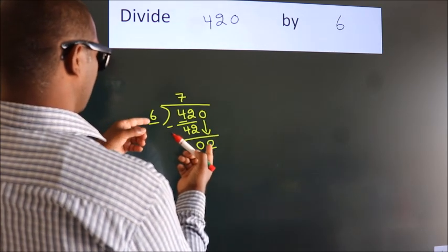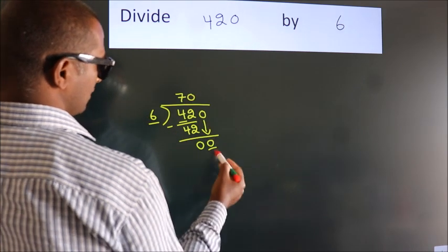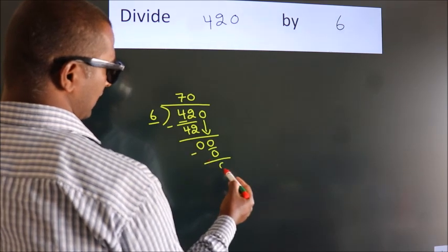When do we get 0? In 6 table, 6 times 0, 0. Now we subtract, we get 0.